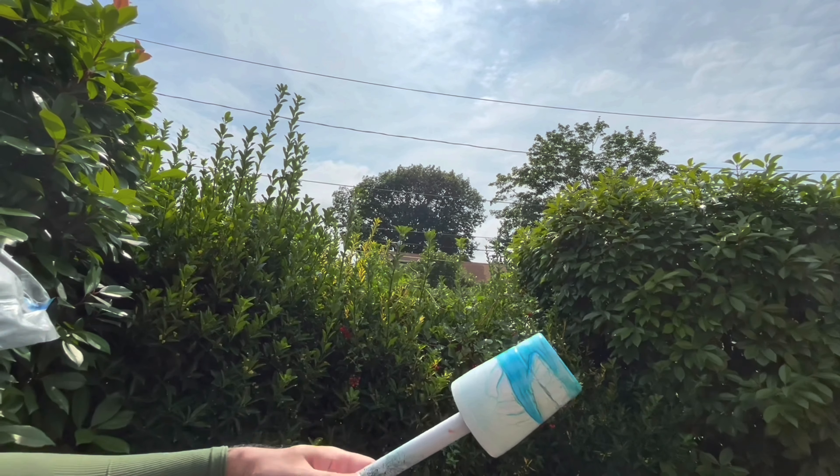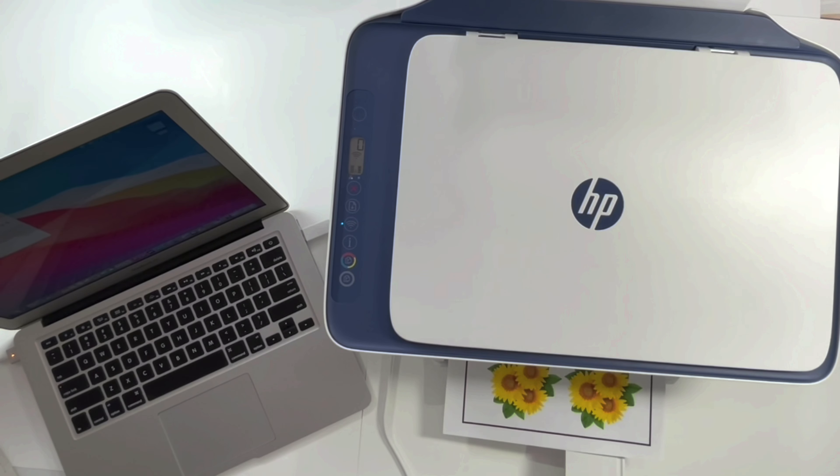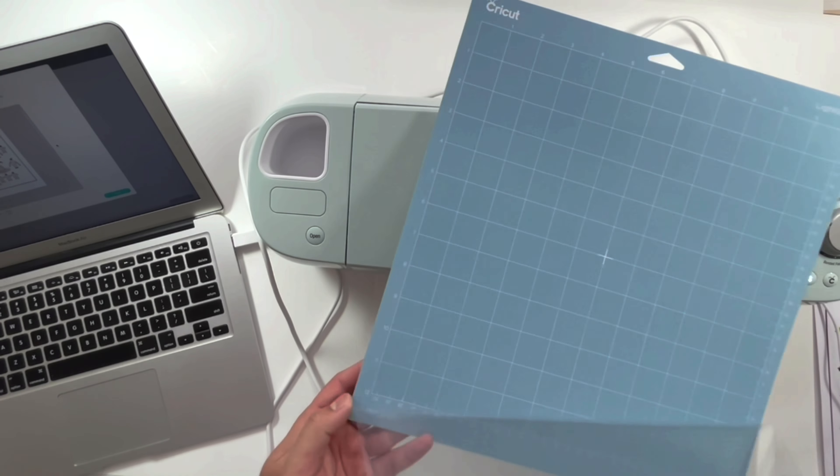Next, I am making the penguin stickers in Cricut Explorer machine using the print then cut method. Here, I have printed the stickers and inserting the vinyl sheet into the Cricut Explorer using a mat. It is going to accurately cut the penguins we need.